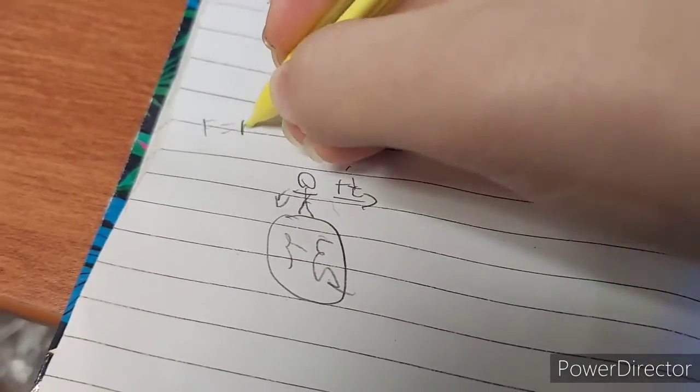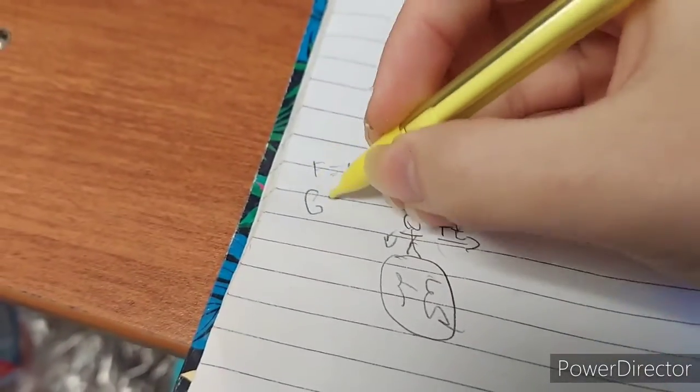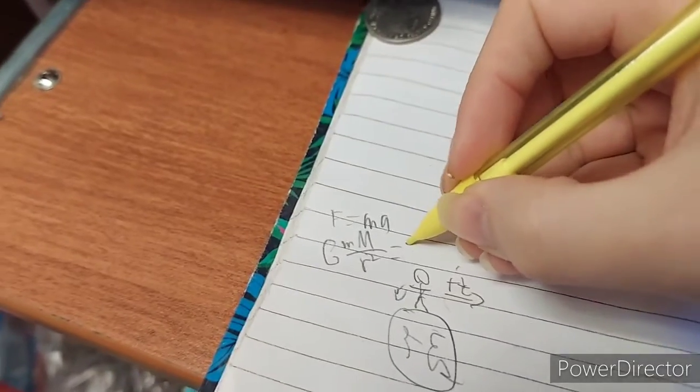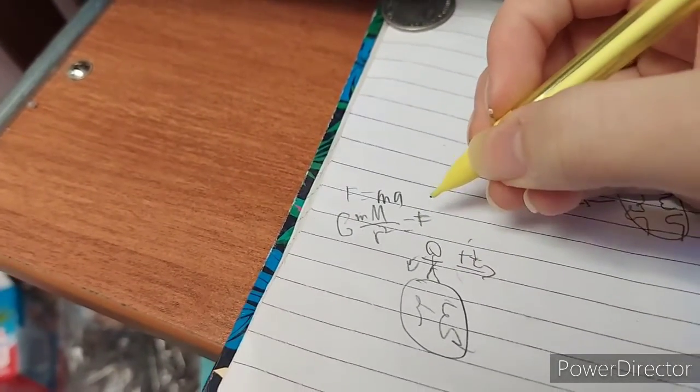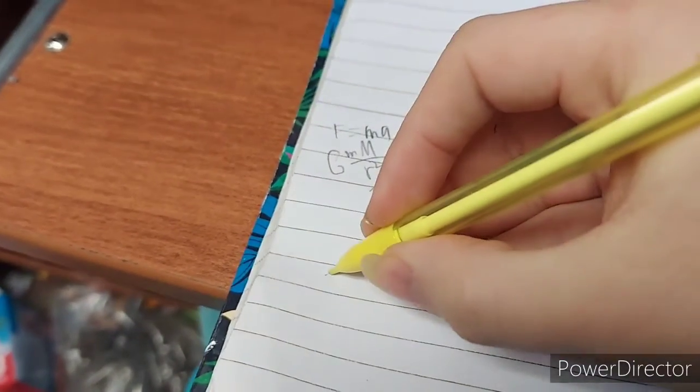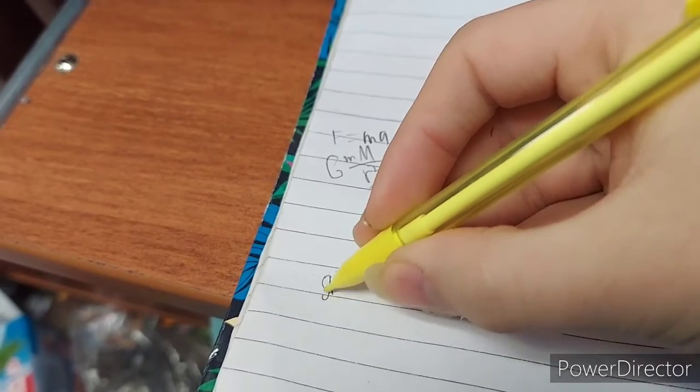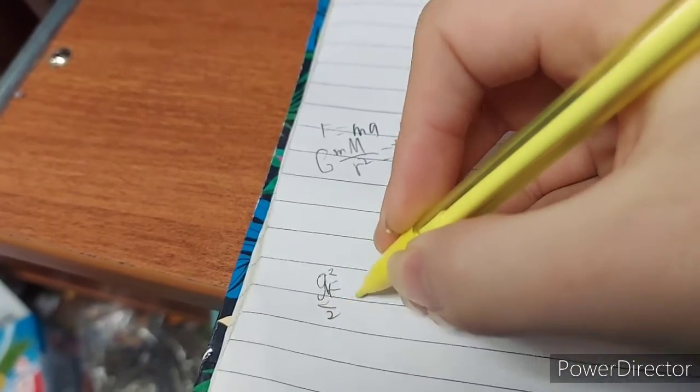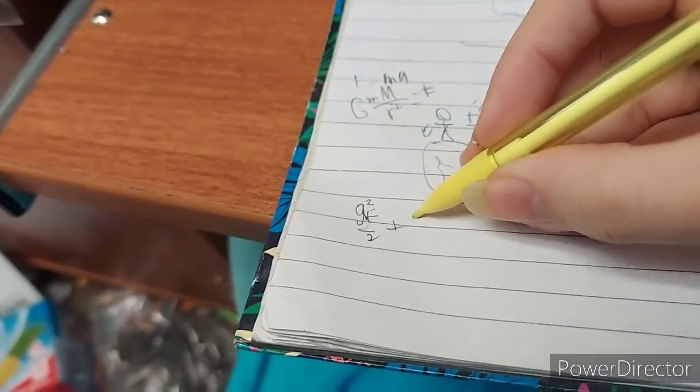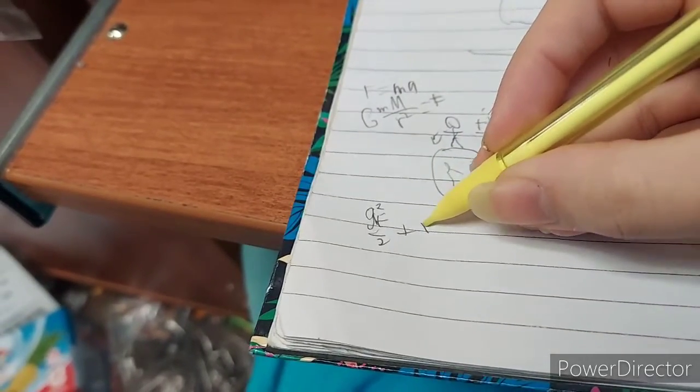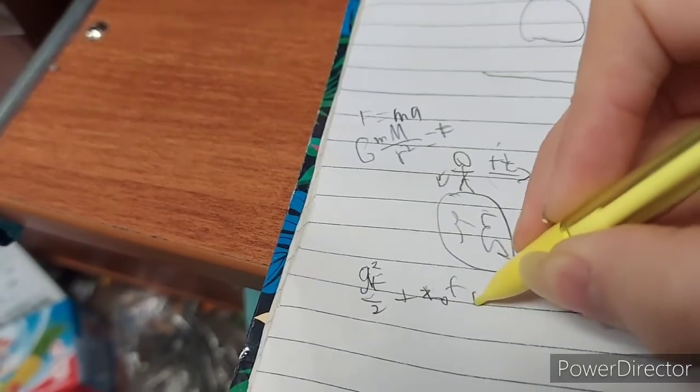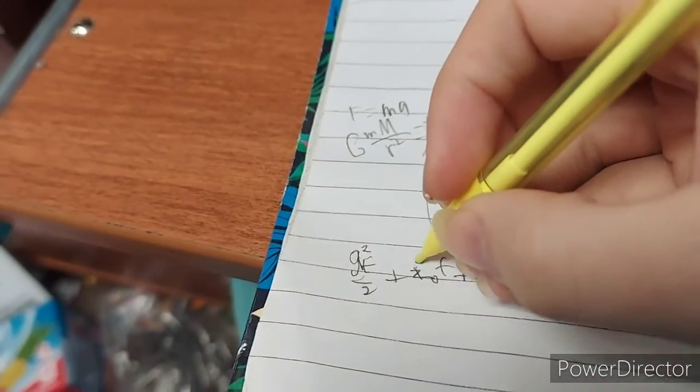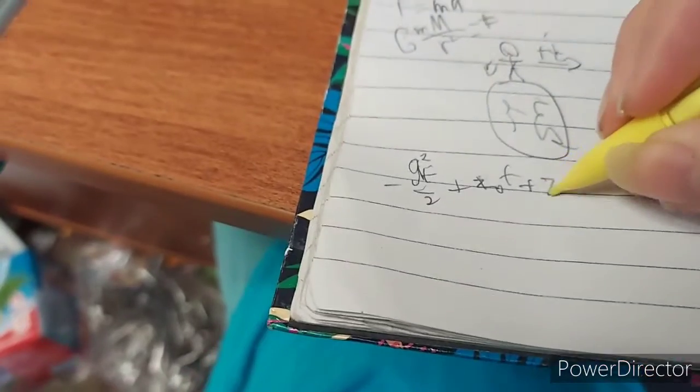According to, you know, F equals MA. G M M over R squared equals F. And it comes up to G T squared over 2 plus your initial upward velocity. Plus your initial position. Okay?